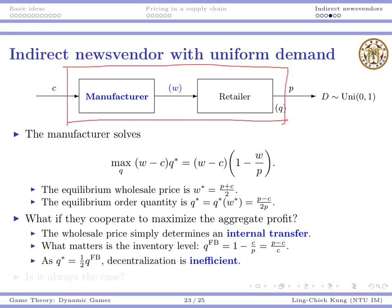The integrated optimal quantity turns out to be exactly double the equilibrium order quantity. In other words, the equilibrium order quantity is one-half of the integrated quantity.